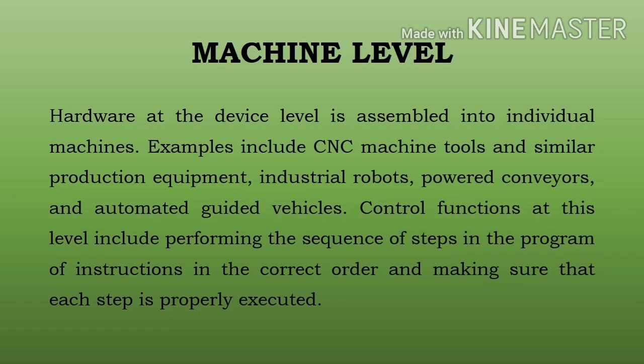Next: machine level. Hardware at the device level is assembled into individual machines. Examples include CNC machine tool and similar production equipment, industrial robot, power conveyor, and automated guided vehicle. Machine tool aisi machine hai jiska metal ya kisi rigid material ka machining karna hota hai — jaise cutting, boring, shearing aur aur bhi operations. Examples of machine tools: lathe machine, drilling machine, milling machine, shaper machine, aur is tarah bahut saari examples hain.